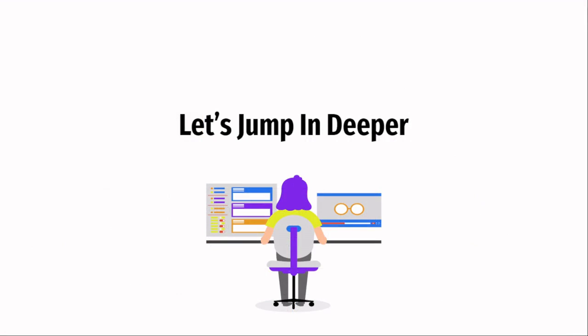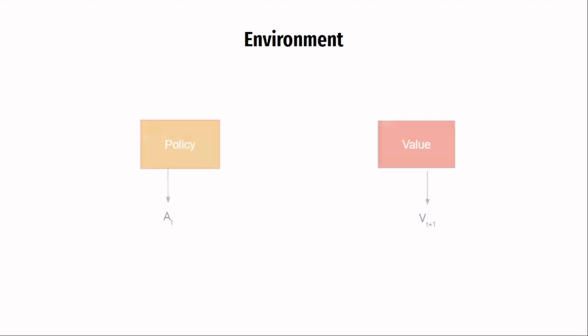Alright, let's jump in deeper into all of these elements. When I said that the policy and value functions take the current observation as input, I was a little wrong. It does not take an observation as input, it takes in a state as input. Now, what is a state?